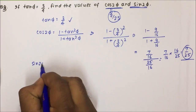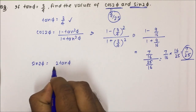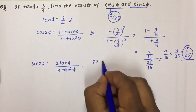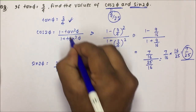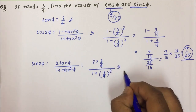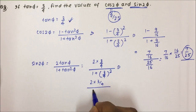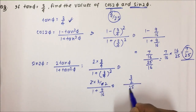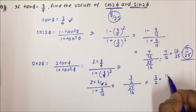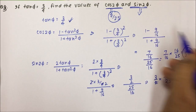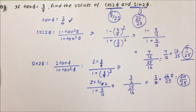Now for sin 2φ: the formula is sin 2φ = 2 tan φ / (1 + tan²φ). Substituting tan φ = 3/4: 2 × (3/4) divided by (1 + 9/16) = (3/2) divided by (25/16) = (3/2) × (16/25) = 48/50 = 24/25. So the value of sin 2φ is 24/25. Like these problems, you will encounter trigonometry questions in your exam and using the formulas you can solve them in seconds.